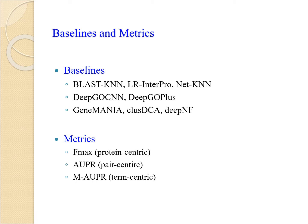We also compared DeepGraphGO with three most representative network-based methods — GMAI, SDCA, and DeepNF — in specific species. We used Fmax and AUPR as the evaluation metrics. Fmax is protein-centric and has been used in CAFA as the main evaluation metric, while AUPR is widely used for multi-label classification. Following network-based methods, we also used macro-AUPR as the term-centric evaluation metric.